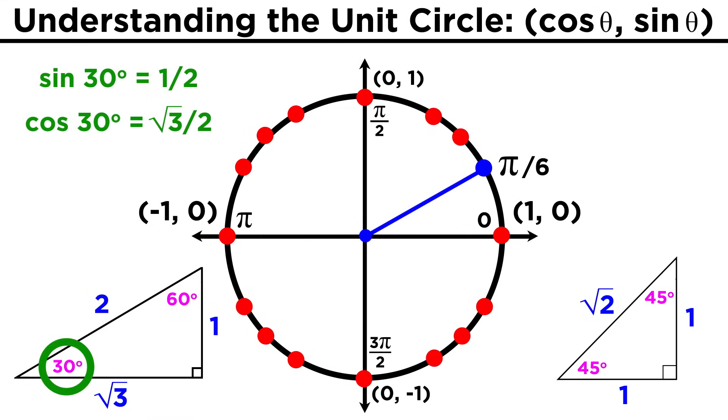Otherwise, just take my word for it that the sine of π/6 radians, or thirty degrees, is one half, and the cosine is √3/2. That means that the coordinates of this point are (√3/2, 1/2).